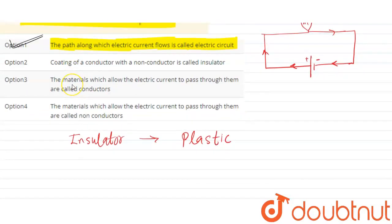Conductors allow electricity to flow easily. Coatings can be insulators. Non-conductors are called insulators.